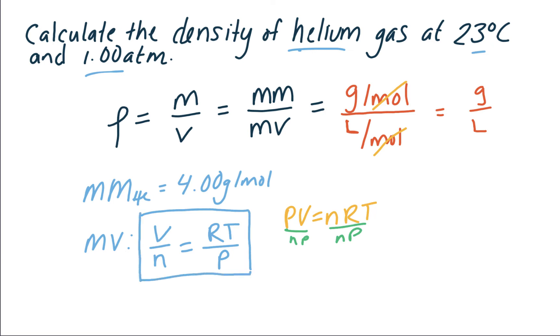We know that molar volume will have units of liters per mole, so as we plug everything in for this particular scenario, let's make sure that we get those units back. So we want the molar volume of helium at 23 degrees Celsius and 1 atmosphere. So R is a constant. It's always the same. Temperature needs to be in Kelvin, so we need to add 273 to 23.